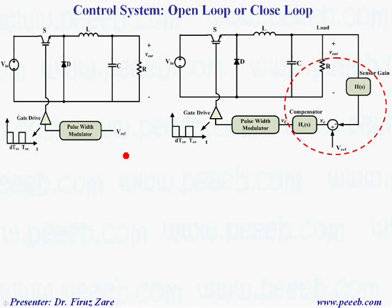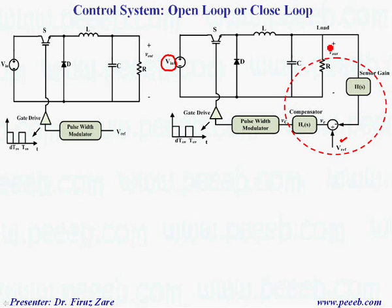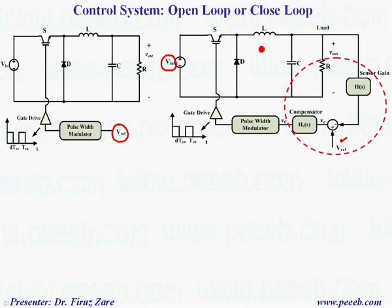When we design a power supply, we can apply open loop or closed loop depending on the application. If we need a very good dynamic response, we need a closed loop control system because if the input voltage fluctuates, we can measure the output voltage, compare it with the reference, and compensate the error through a compensator to control the transient. In open loop, we can control the duty cycle based on the reference voltage, but there is no control on the output voltage — any fluctuation or ripple from the DC voltage cannot be compensated. Open loop is very simple, but for closed loop we need to know the model of the system to design the compensator.